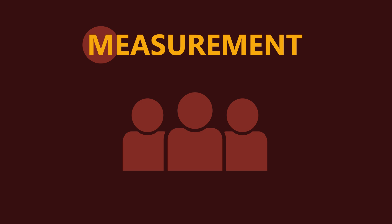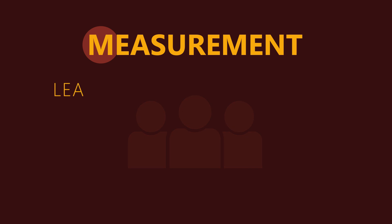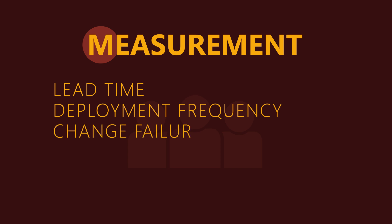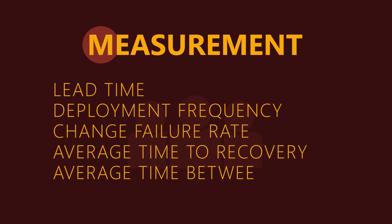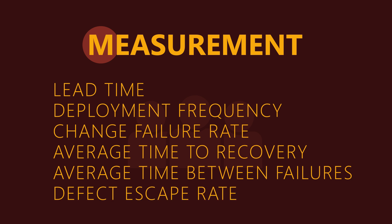DevOps teams should develop and track certain key metrics in order to help check their systems. These metrics can include things like lead time — the time it takes to implement, test, and deploy code — deployment frequency, change failure rate, average time to recovery, average time between failures, and defect escape rate. Overall, by measuring various key performance indicators, the team should strive to continuously improve their systems and IT operations.